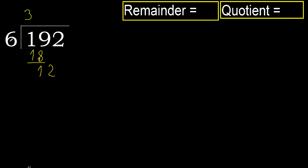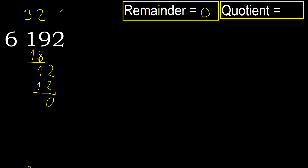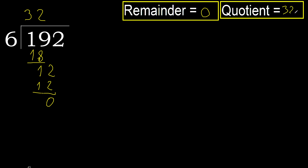Next. 12. 6 multiplied by 2, 12 is not greater. Subtract. Therefore finish it, 192 divided by 6 is 32.